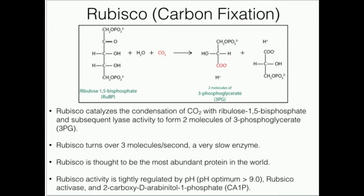Some general information about RUBISCO: it has a turnover number of about three molecules per second. This is a very slow enzyme — one of the slowest you'll ever run across. Compare it to catalase, which has a turnover of 40 million per second. So how are plants able to maintain their metabolism with such a slow enzyme? They simply make a lot of it. The turnover is low, but the Vmax doesn't have to be low. RUBISCO is thought to be the most abundant protein in the world — plants make a ton of it to satisfy their carbon fixation requirements.